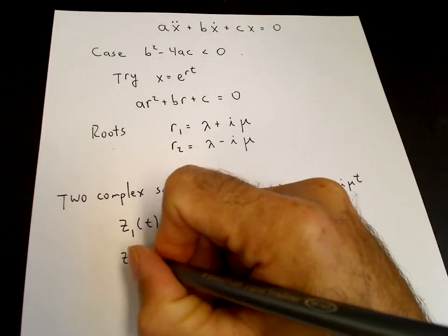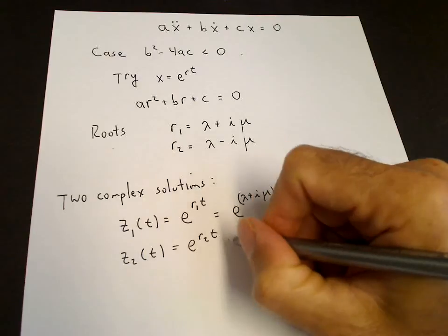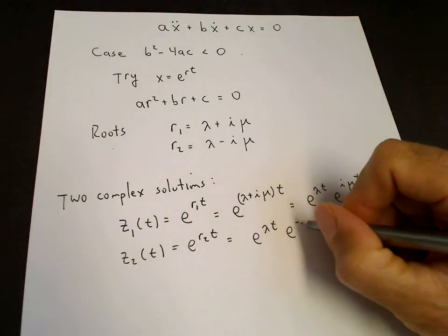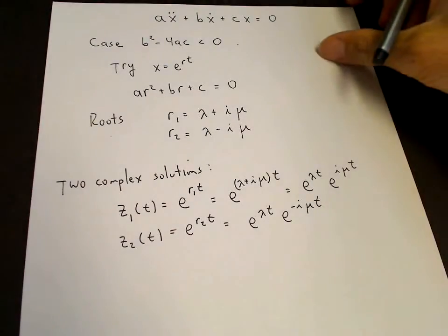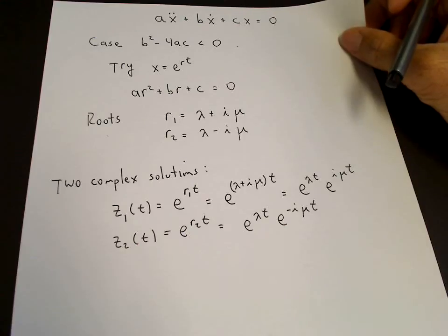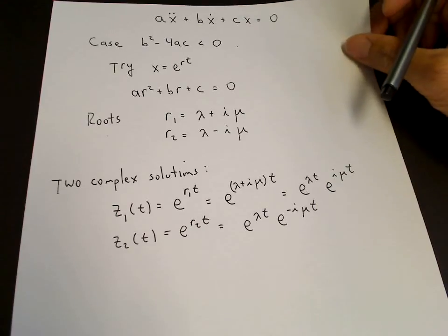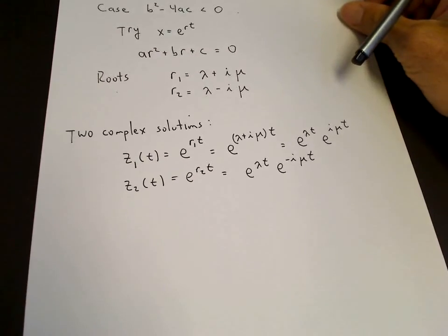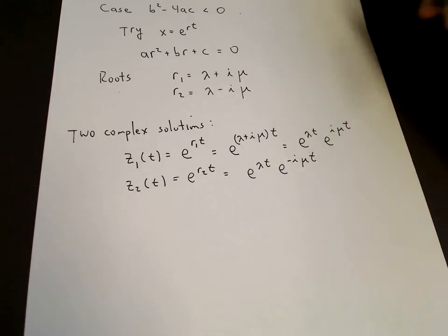The second solution is e to the r2t, and the same way we can write that as e to the lambda t times e to the minus i mu t. We want to find real solutions to the differential equation. Since a, b, c are real and the initial conditions are real, we expect x to be real. We can find two independent real solutions by forming linear combinations of z1 and z2, by the principle of superposition.